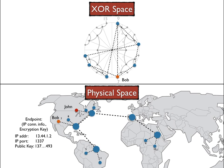More precisely, John requires the IP address of Bob, which is its address on the internet, and the IP port on which to connect. For those of you who don't know what an IP port is, it allows multiple services on the same machine to be exposed to the internet independently.